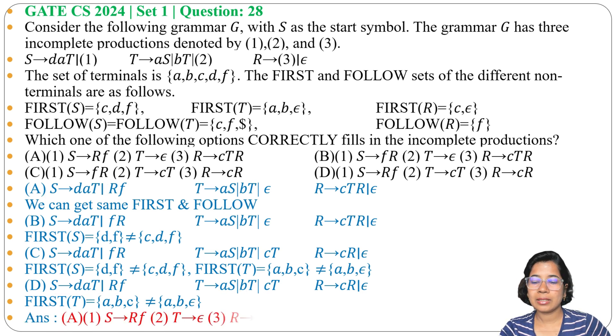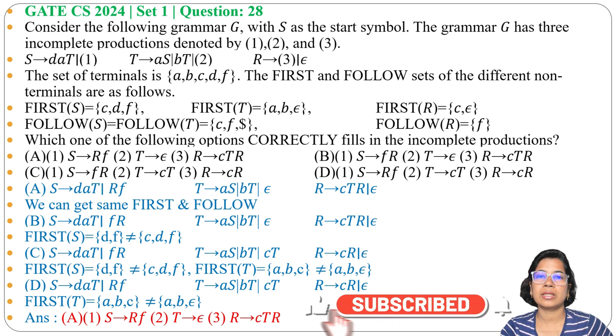So you got answer as option A. For 1, we can write S→RF. For 2, we can write T→Epsilon. And for 3, we can write R→CTR. I already discussed first and follow in Chapter 2 of compiler design lecture. Just go through the lecture. And if this lecture is helpful for you, please like, share, and subscribe. Thank you.